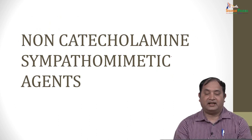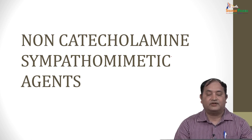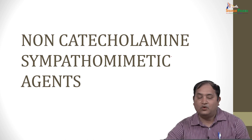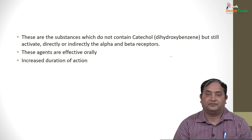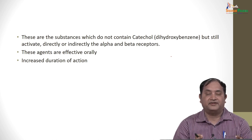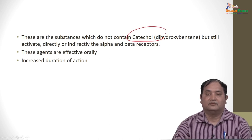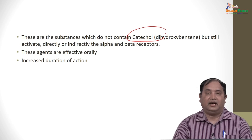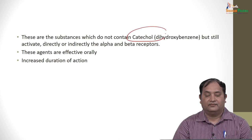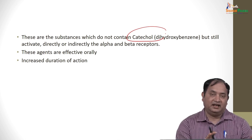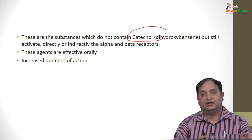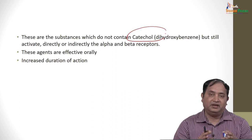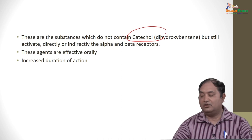Let us take a second topic: non-catecholamine sympathomimetics. These are substances that do not have the catechol (dihydroxybenzene) structure, but still activate directly or indirectly acting alpha and beta receptors. The benefit of these agents over catecholamines is that most catecholamines cannot be given orally as they are inactivated by COMT or MAO. Non-catecholamines can be given orally, are effective orally, and have a longer duration of action.